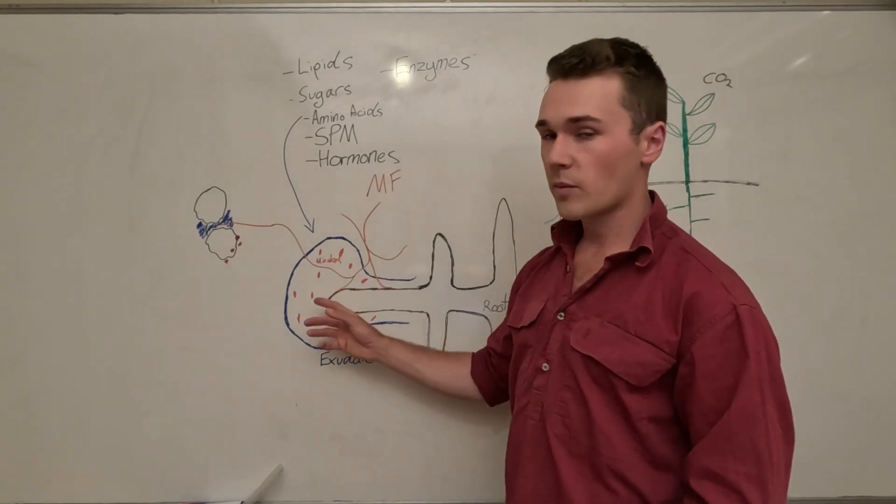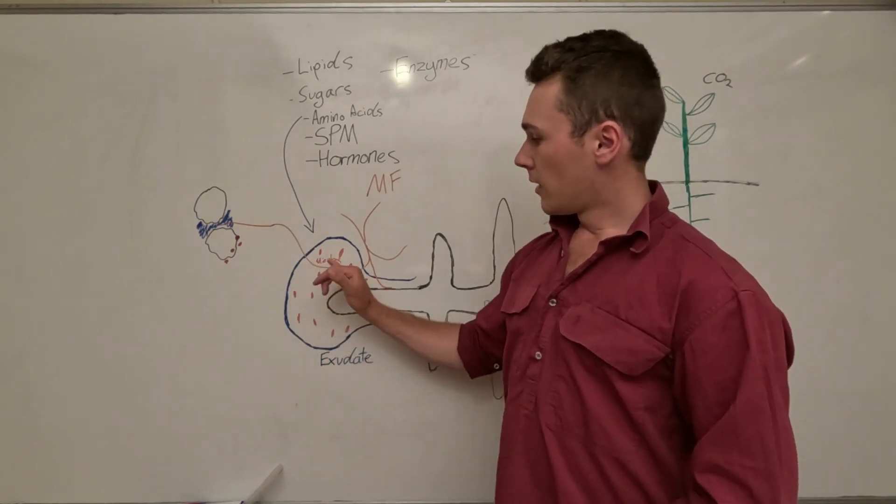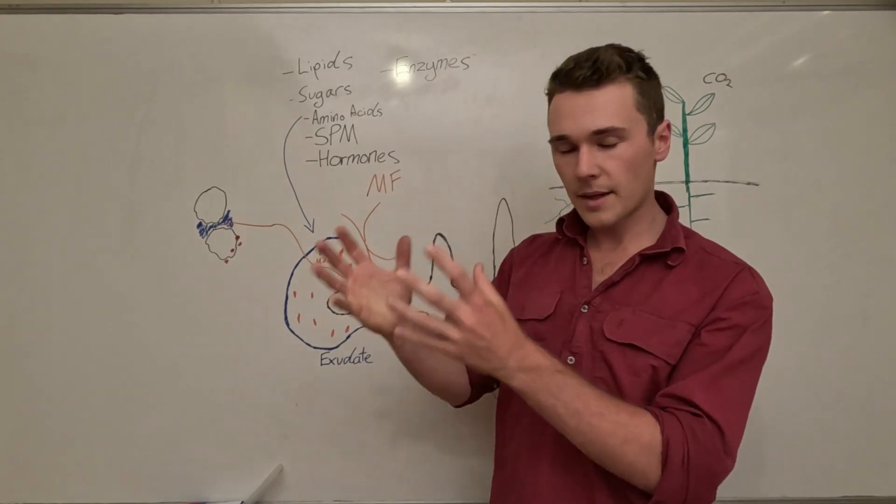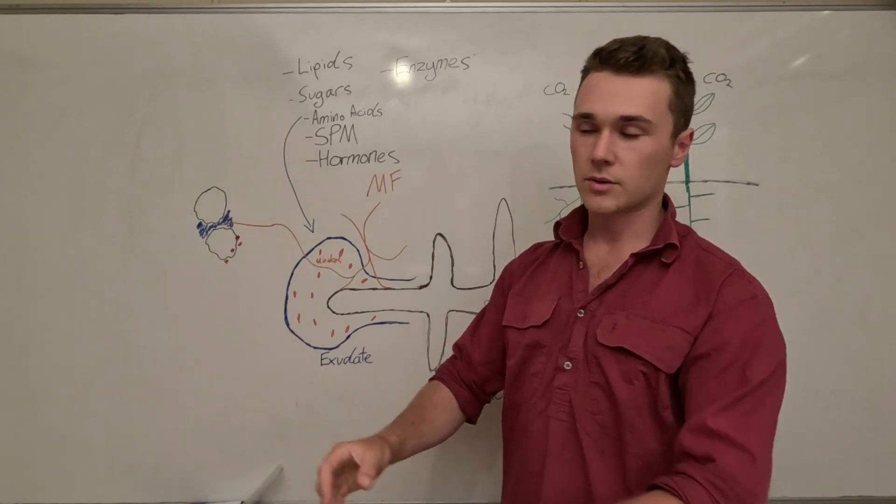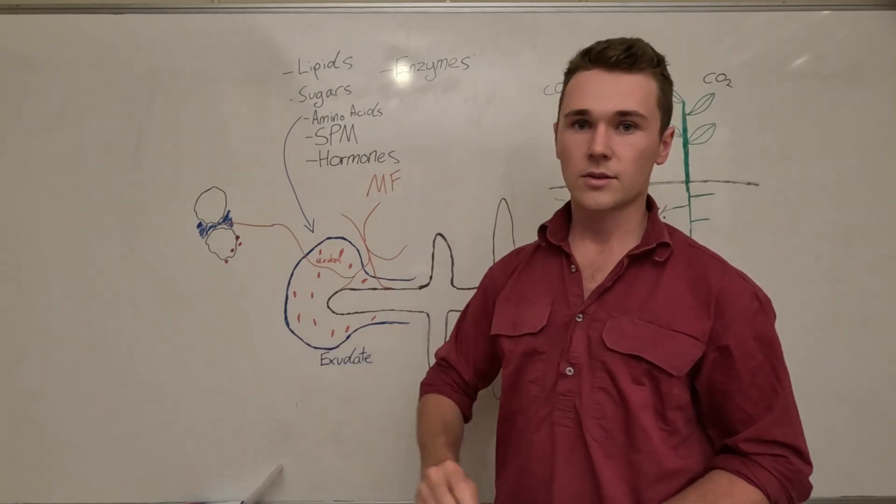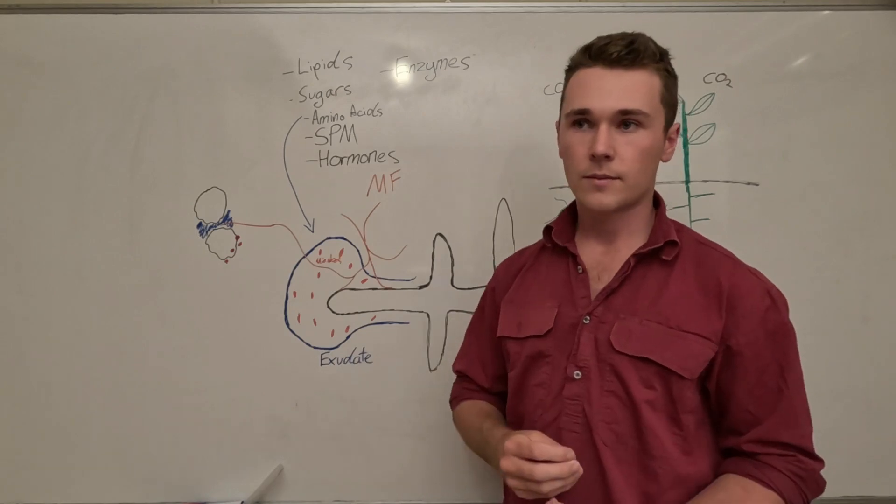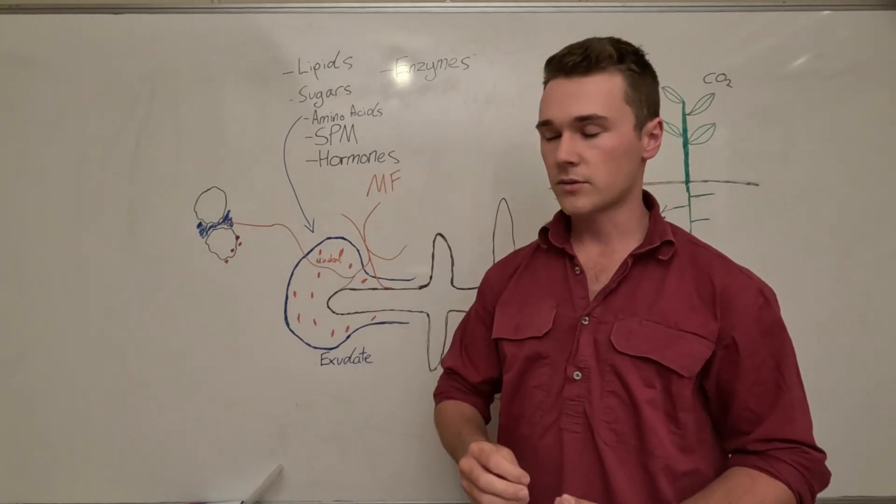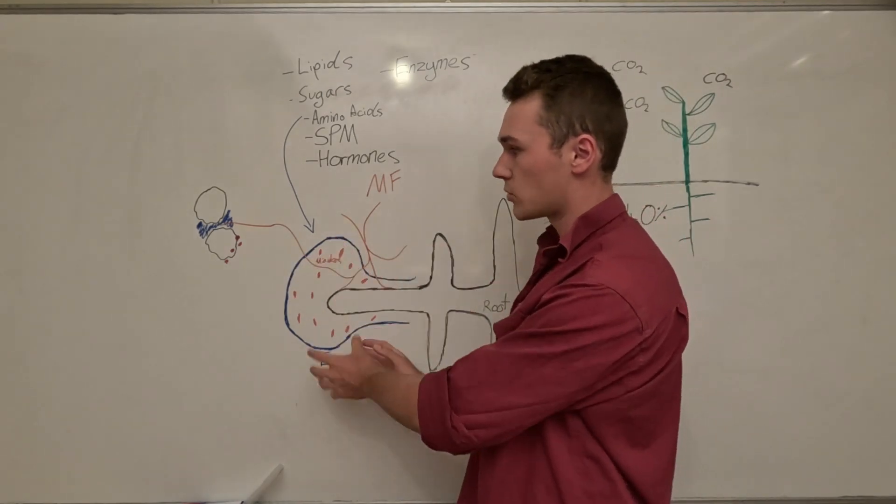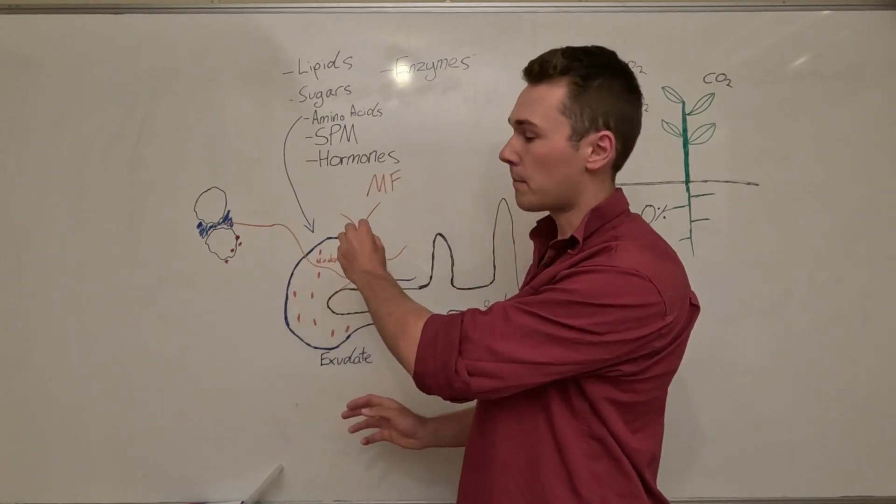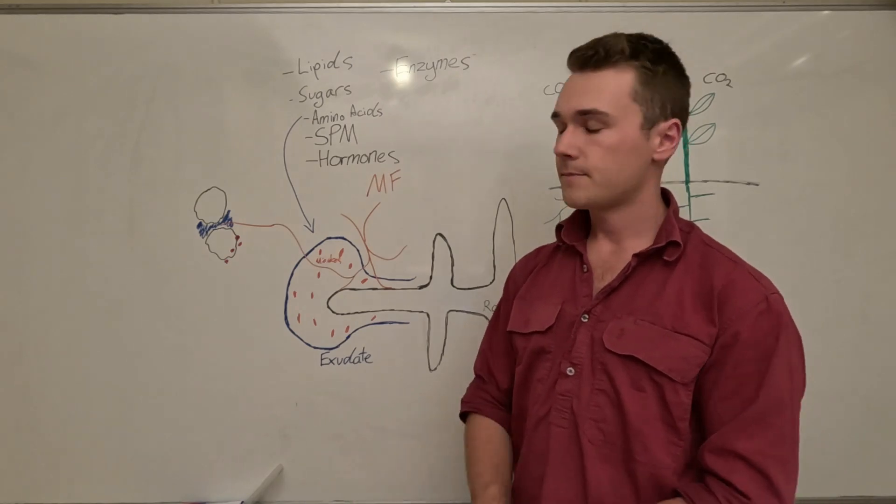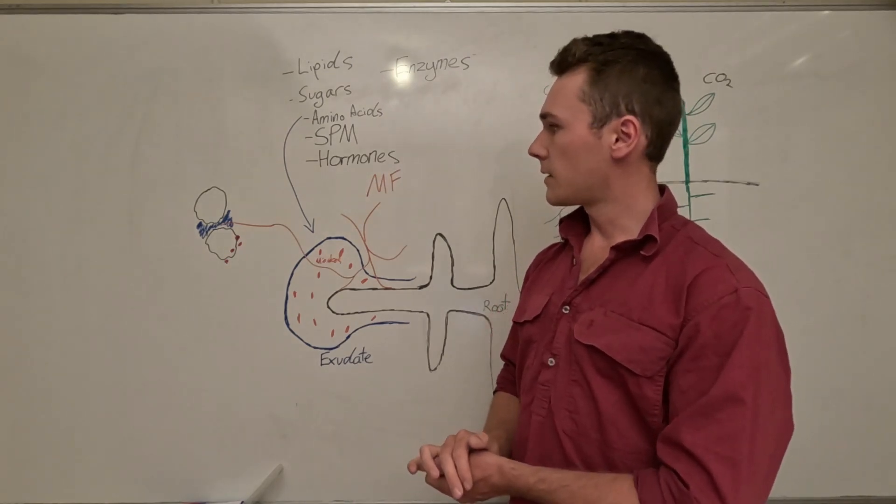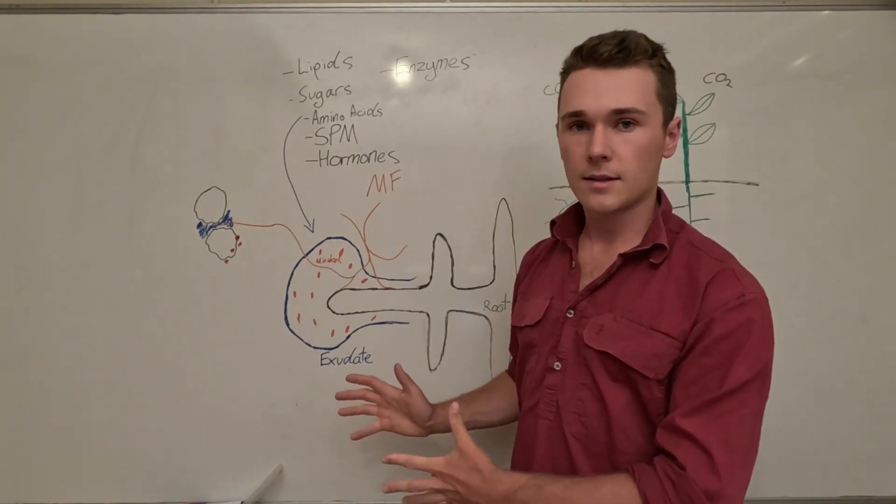The same thing happens with some of our bacteria. The plant can tell the bacteria to go get a particular mineral. So a plant might say I want phosphorus, go get me phosphorus. I'll give you sugar if you give me some phosphorus. Effectively the microbes will go mine soil particles in search of phosphorus and then come back and exchange it with our plant.